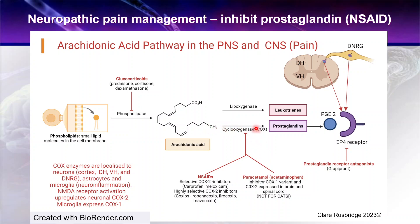Beyond the cyclooxygenase pathway, there's another way to affect prostaglandin in the nervous system — using a drug that acts directly against the prostaglandin receptor, specifically the EP4 receptor, which is expressed in the dorsal horn of the spinal cord, the dorsal nerve root ganglia, and also in the cortex. As far as I'm aware, there is only one drug available in veterinary medicine for that: grapiprant. It is classed under the non-steroidal anti-inflammatory drugs but is a specific prostaglandin receptor antagonist.